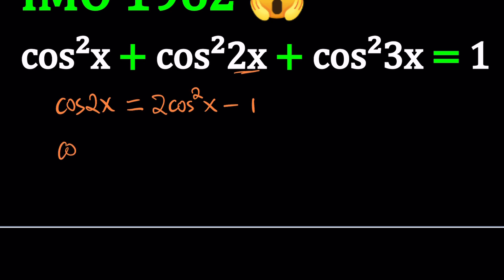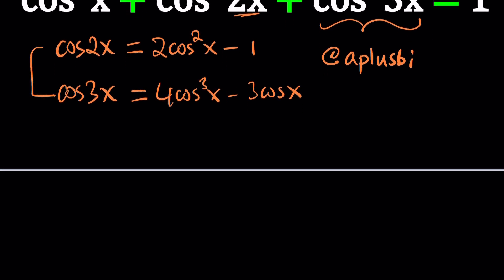And then what about cosine of 3x? Cosine of 3x can be written as 4 cosine cubed x minus 3 cosine of x. You can find this by using cosine of 2x plus x and using the sum formula, or you can use complex numbers which makes it a lot easier, the Moivre's formula or polar form. By the way, if you like complex numbers, check out my other channel which is A plus BI where I focus on complex numbers only.